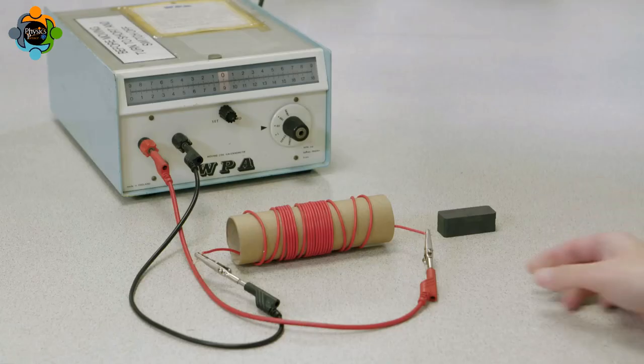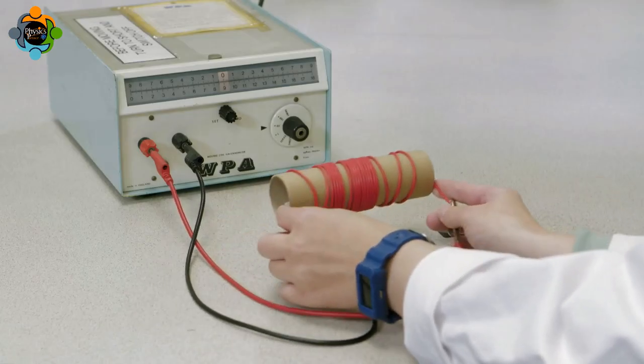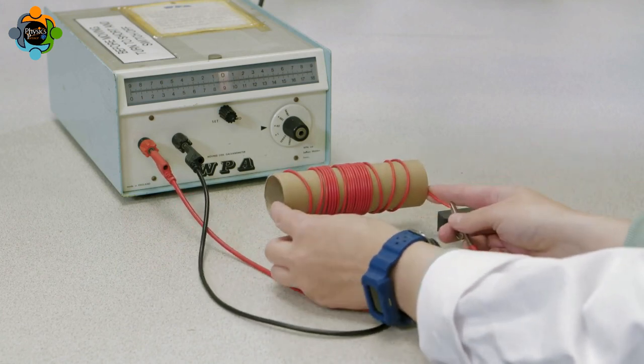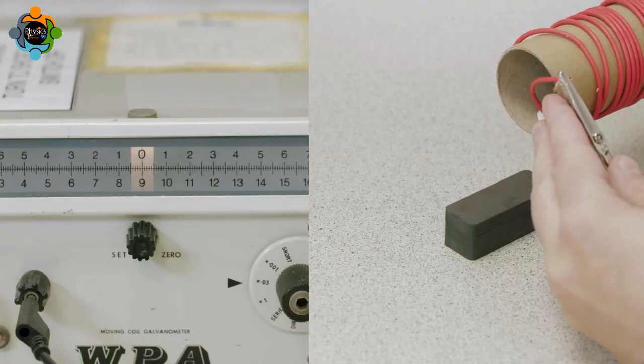This time, the magnet is held stationary and the coil of wire is moved over the magnet. Once more, an EMF is induced and produces a current.